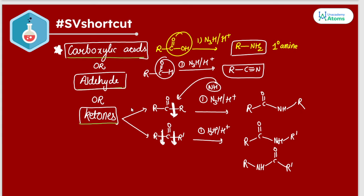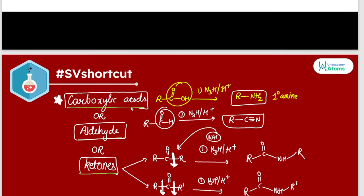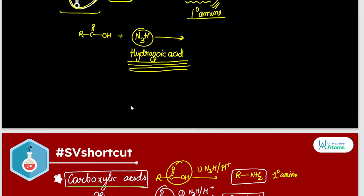Carboxylic acid, in which R-C=O-OH, we are reacting it with - what was the compound name? N3H. The name of N3H was hydrazoic acid.